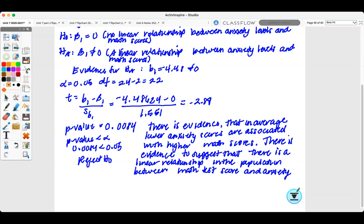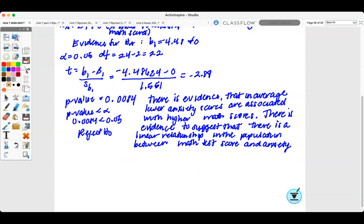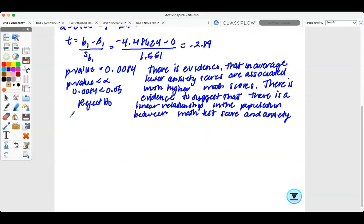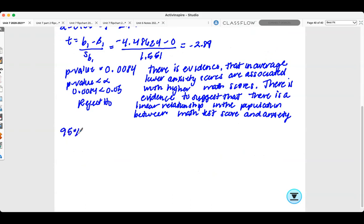Now, we are going to do a 95% confidence interval. So, that would be B1 plus or minus T star times our standard deviation of B1. So, B1 would be negative 4.48624 plus or minus T star. You can either use your calculator or go to your table. And remember, the degrees of freedom is 22. And you would get 2.074 times the standard deviation which is 1.551.